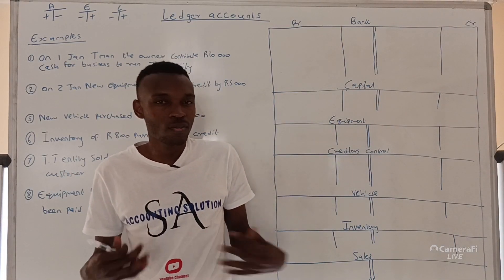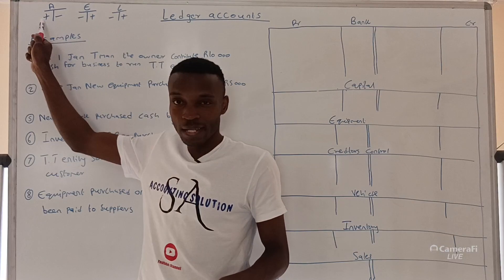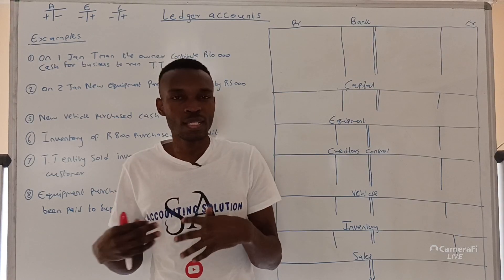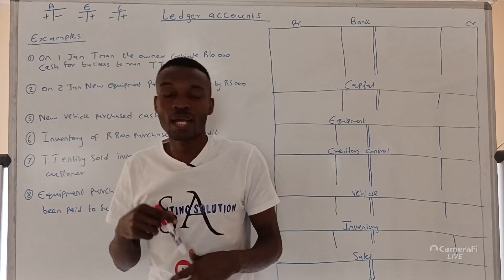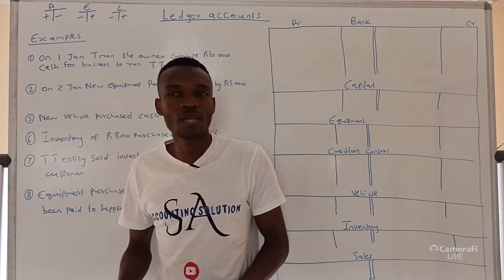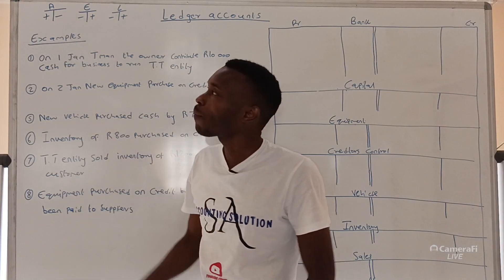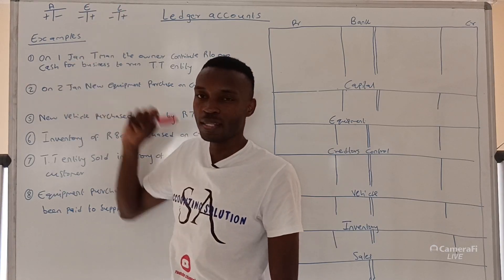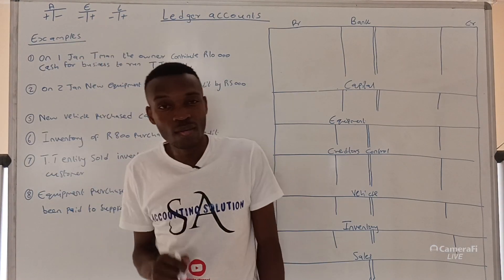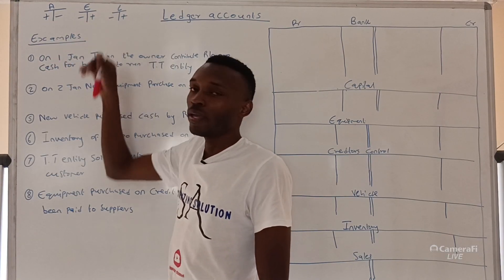The principle behind the ledger account, which also applies under the accounting equation, is these rules. When you deal with assets, on the debit side record what is increasing an asset — for example, if we receive money, bank is an asset, so we debit bank. On the credit side, record what is reducing our assets — if we pay something and money goes out, it must be on the credit side.